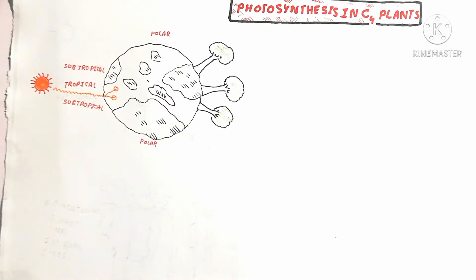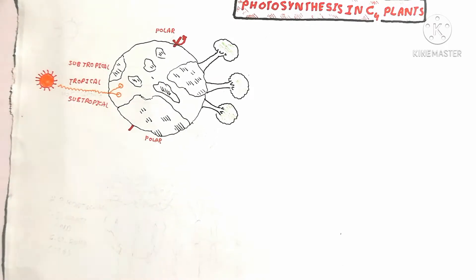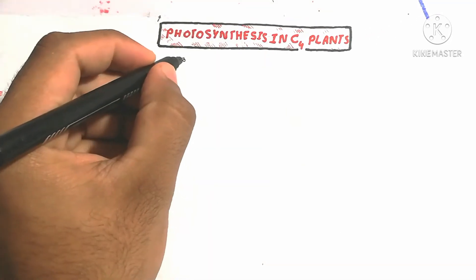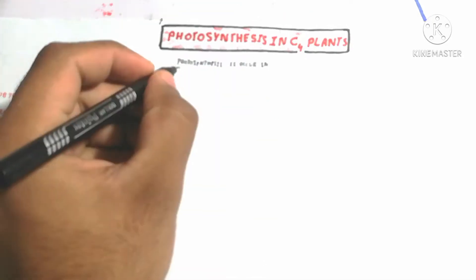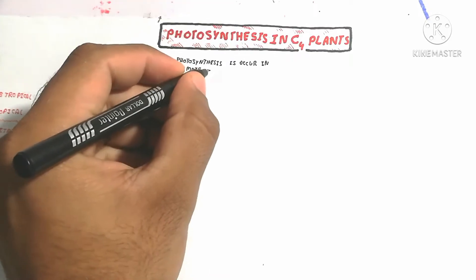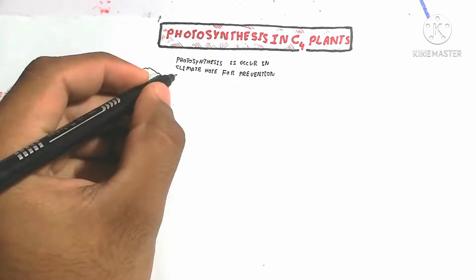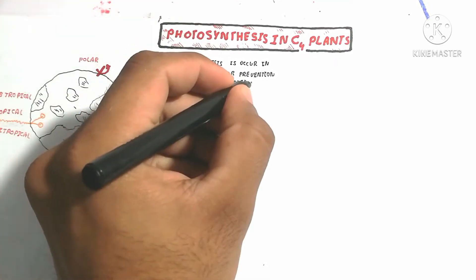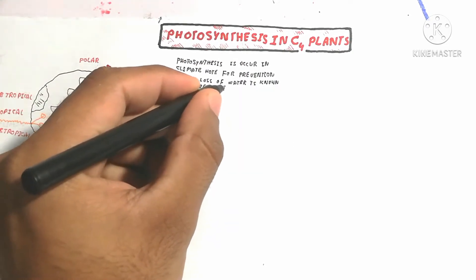This photosynthesis occurs in the form of C4 plants. C4 means carboxylation in the form of a four-carbon containing compound, which is different from C3 plants. Photosynthesis in C4 plants occurs in hot climates for prevention of water loss.